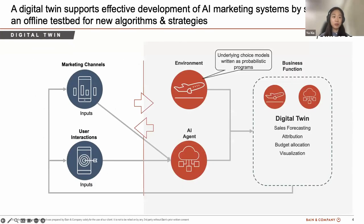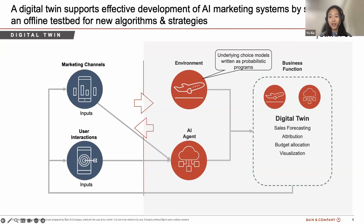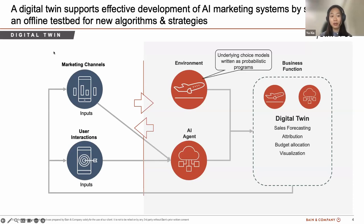We know what probabilistic programming is. The next question is how could we fit such a tool into the digital twin? To answer this, I want to first explain what a digital twin is in the retail marketing scenario. The retailer applies marketing strategies to enhance customer loyalty and increase customer lifetime value, but applying those strategies has a cost burden. Finding the balance between effective strategies across channels and bearable cost is a key challenge.